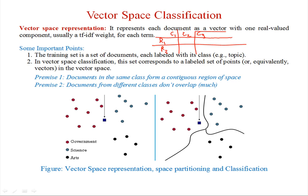In vector space representation, we represent words and their TF-IDF scores. Word 1 has its TF-IDF score, word 2 has its TF-IDF score, word 3 has its TF-IDF score, and so on. Similarly, document 2 has its words and their TF-IDF scores. This is the traditional vector space representation.